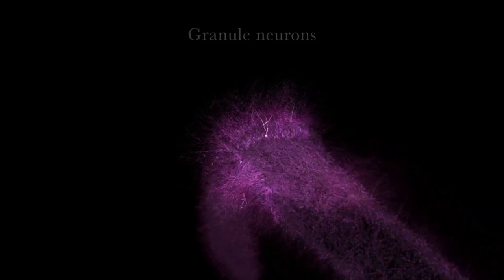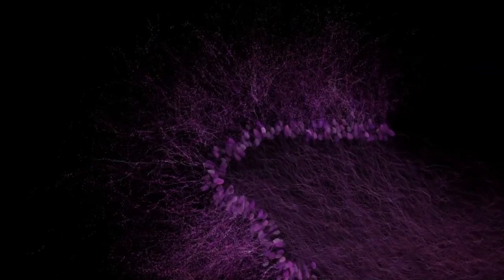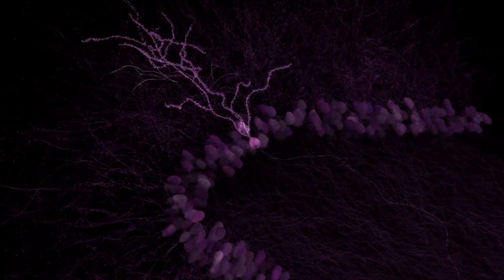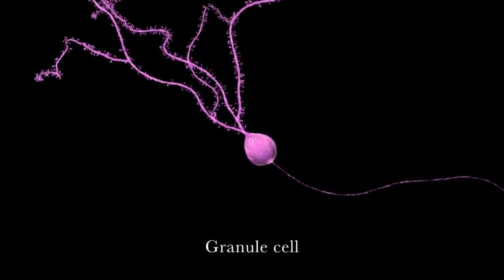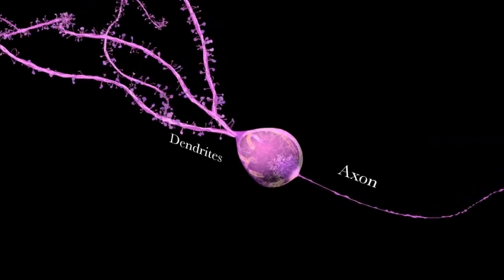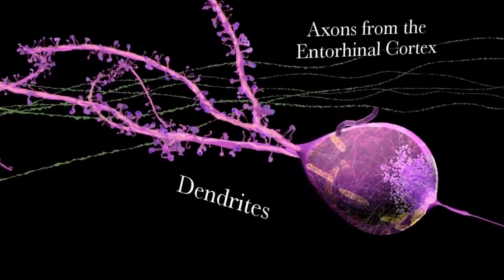Now, deep inside the hippocampus, neurons communicate with each other through a series of electrical impulses that travel from one cell to the other, much like these electrical signals that you will see in a second. If you zoom in into a particular pyramidal neuron or hippocampal neuron, like the one shown here, you will find thousands of synaptic connections. These tiny little mushroom-like structures are the site of neuronal communication.